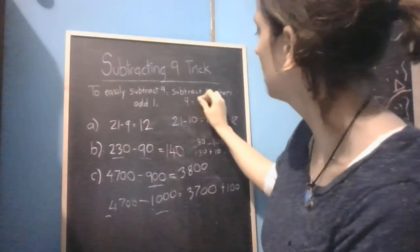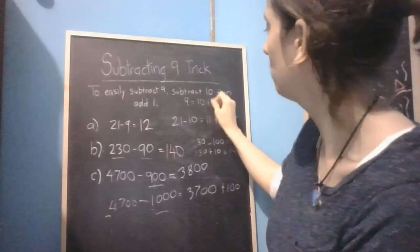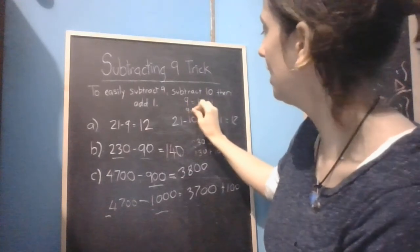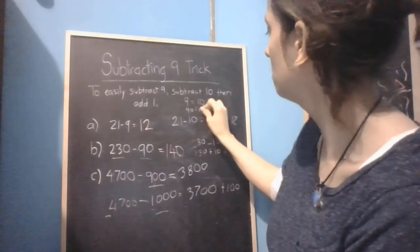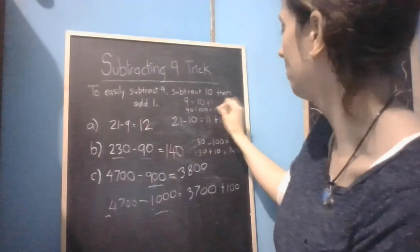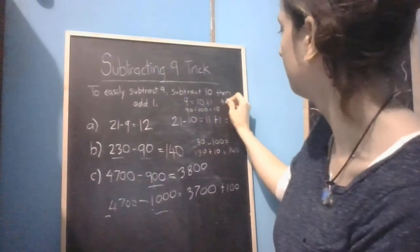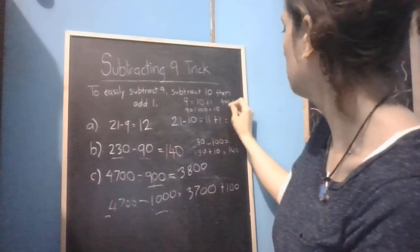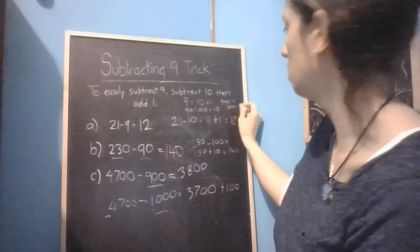So remember 9 goes up to 10 and then add a 1. 90 goes up to 100, add 10. And 900 goes up to 1,000 plus 100.